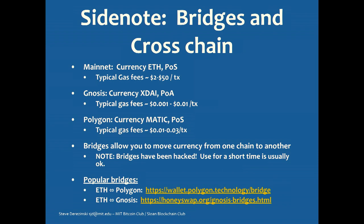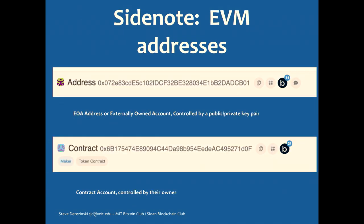You'll get these slides after class. Another quick note: if you go into Etherscan and look at your wallet address, there are two different types of addresses. The first is called an EOA address — Externally Owned Account. One of the things I love about crypto is they don't have any regard for making naming things very meaningful. An EOA is basically a public-private key pair, which means it's a human-owned account.